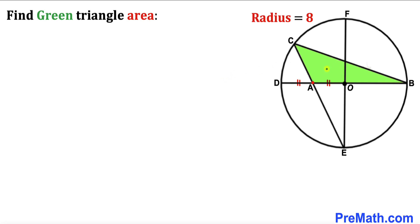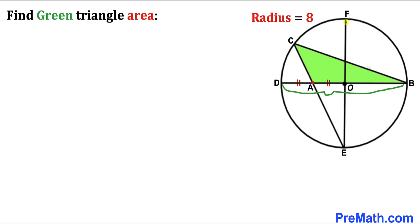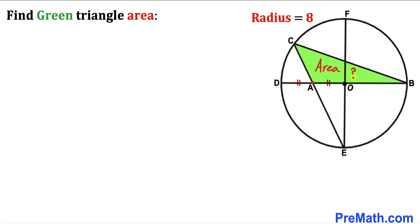In this video we have got a green triangle ABC fully confined in a circle with center O, such that the radius of this circle is 8 units. Moreover, segment AD equals segment AO, meaning A is the midpoint. Furthermore, BD and EF are diameters of this circle, and our task is to calculate the area of the green shaded triangle ABC.